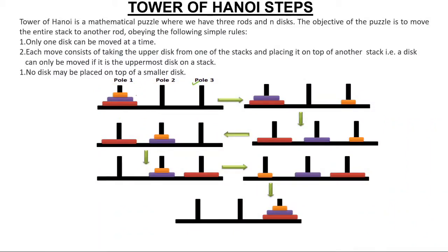There are two constraints: you can move only one disk at a time — you cannot move two or three disks at a time — and you cannot place a bigger disk on top of a smaller disk. A smaller disk can go on top of a bigger one, but not the reverse. Keep these things in mind.